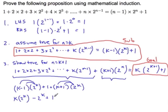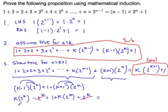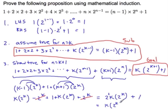minus 2 to the k, plus 1, plus k times 2 to the k, plus 2 to the k. I see a few things canceling — we have 2 to the k and minus 2 to the k, so those go away. And then we have k times 2 to the k and k times 2 to the k, so we have 2k times 2 to the k, plus the 1 in the middle. Bringing that 2 together gives us k times 2 to the k plus 1 plus 1.